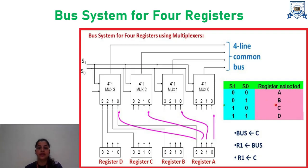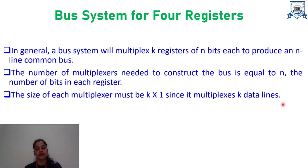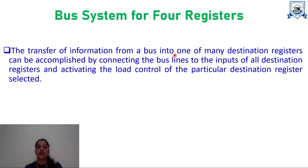Similarly, register B will be selected when the input combination for S0 and S1 is 0 and 1. In general, a bus system will multiplex K registers of N bits each to produce an N-line common bus. The number of multiplexers needed to construct the bus equals N, the number of bits in each register. The size of each multiplexer must be K x 1 since it multiplexes K data lines. The transfer of information from a bus into one of the destination registers is accomplished by connecting the bus lines to the inputs of all destination registers and activating the load control of the particular destination register selected.